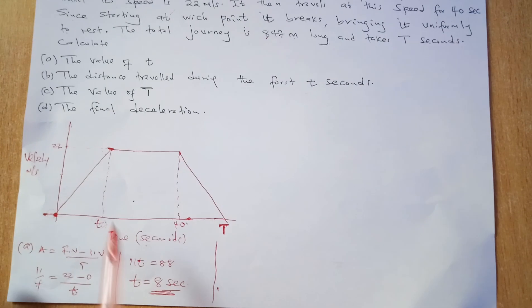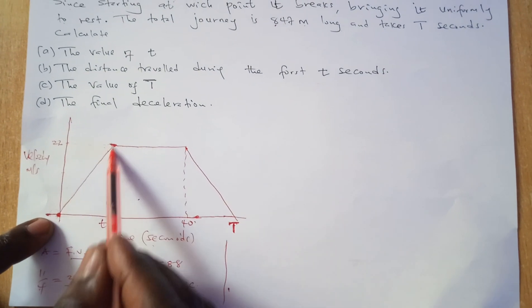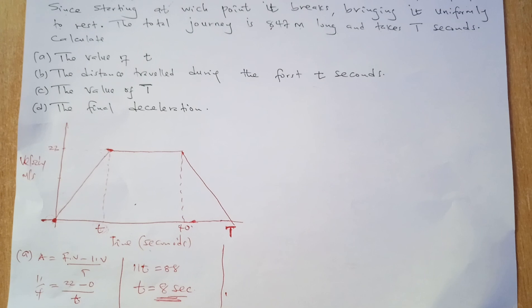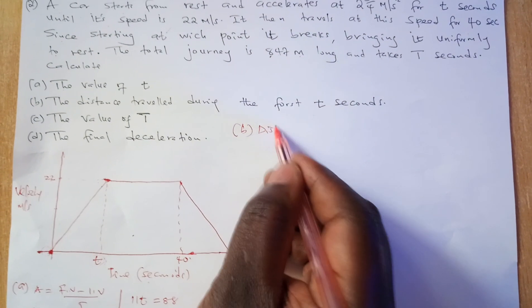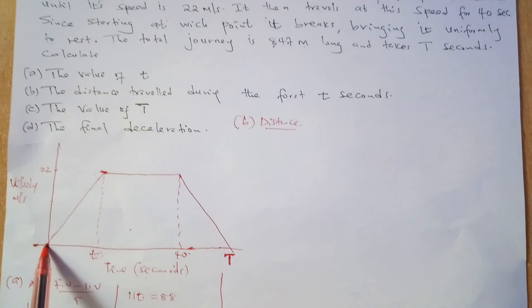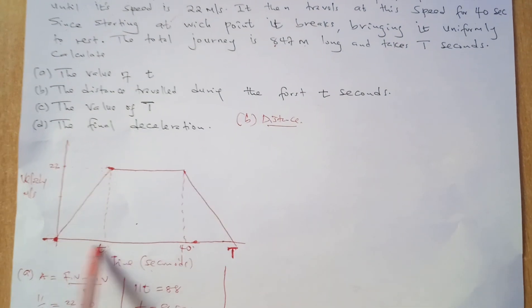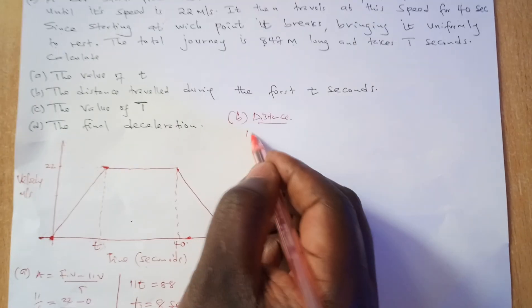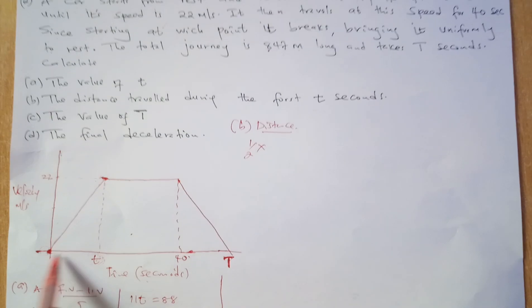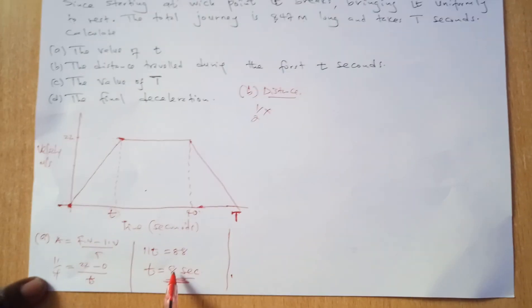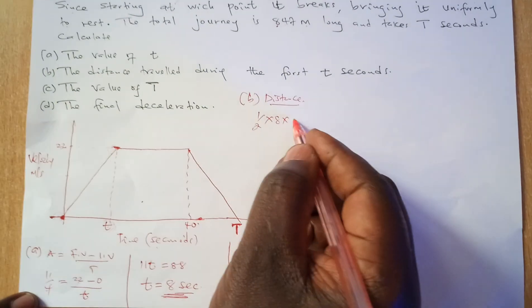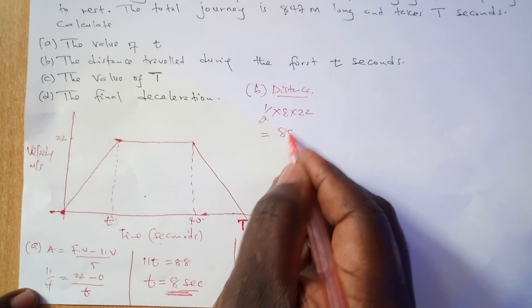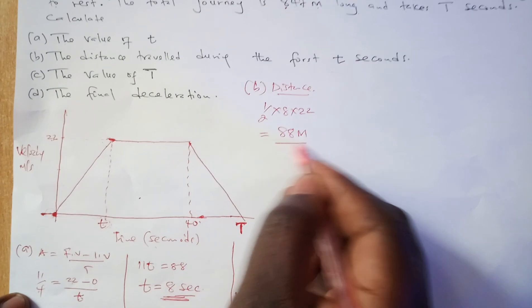Part b asks for the distance traveled during the first t seconds. Distance is the area under that region of the graph. The shape from 0 to t is a triangle, so area equals half times base times height — that is half times 8 times 22 — which gives 88 meters.